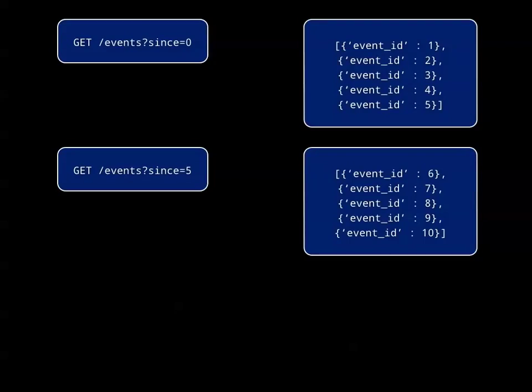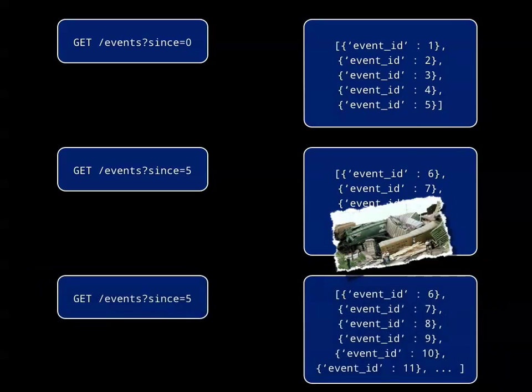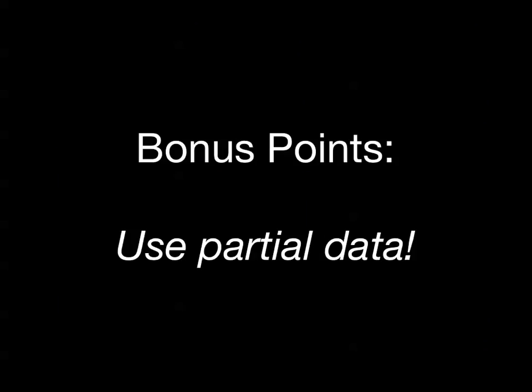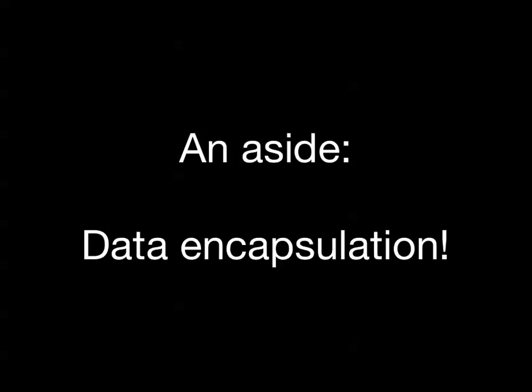One trick you can use is to make sure your service can repeatedly serve up events, even ones it thinks it has already sent — use caching to store previously generated events. The easiest way to do this is by adding a 'since' parameter to your URLs. Your client can then ask for old events if it wants them, and if your connection crashes you can guarantee consistency. For bonus points, use partial data so that even if your connection drops halfway through, you can make use of the information that has already come through.